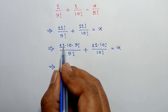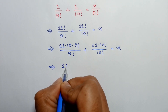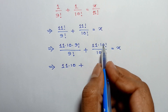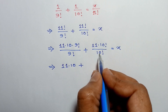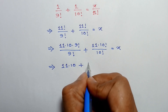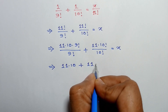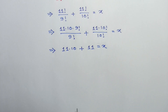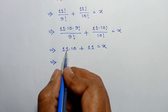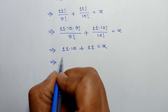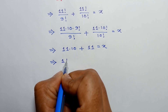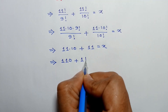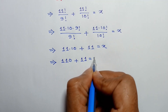So it will remain 11 times 10. Then the 10 factorial and 10 factorial will cancel out, so it will remain 11, giving us 11 times 10 plus 11 is equal to x.